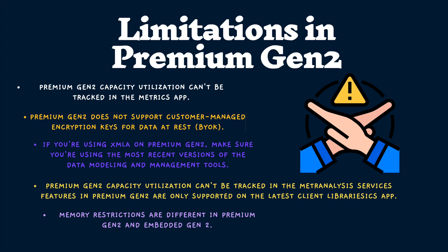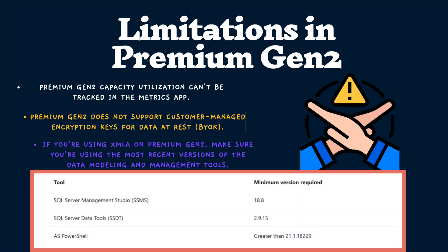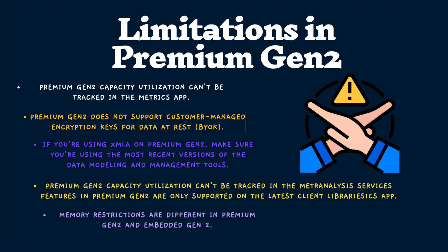If you are using XMLA endpoint connectivity on Premium Gen 2, make sure you are using the most recent version of data modeling and management tools, such as SSMS (SQL Server Management Studio). Always keep an updated version installed. Analysis Services features in Premium Gen 2 are only supported on the latest client libraries, not older versions, so always keep your libraries updated. Specifically: SQL Server Management Studio requires a minimum version of 18.8; SQL Server Data Tools requires 2.9.15; and PowerShell should be greater than version 21.1.18229.